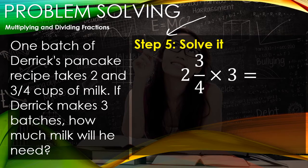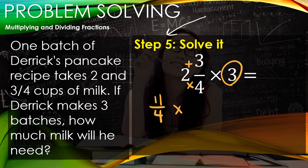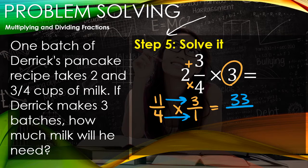So I have 11/4, and then make our whole number 3 into an improper fraction, which is 3/1. Our next step is to multiply our numerators together: 11 times 3 is 33, and 4 times 1 is 4. So we have this improper fraction 33/4. We're doing so good! Let's change our improper fraction into a mixed number.